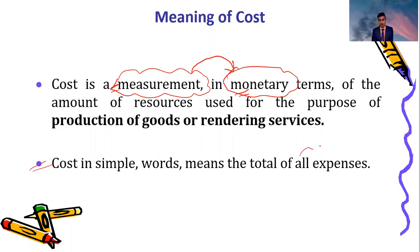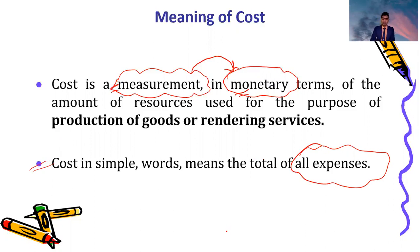Cost includes all expenses. When you have total expenses and you aggregate them, what you arrive at is the cost.